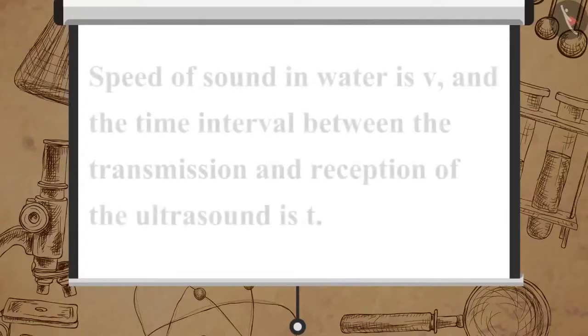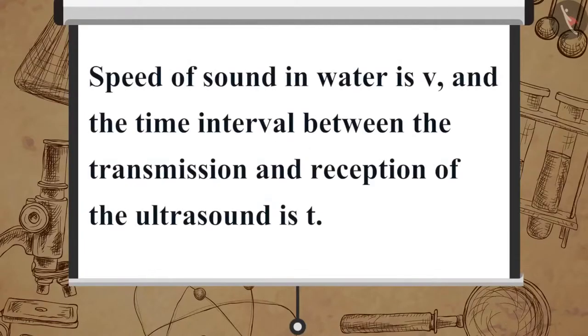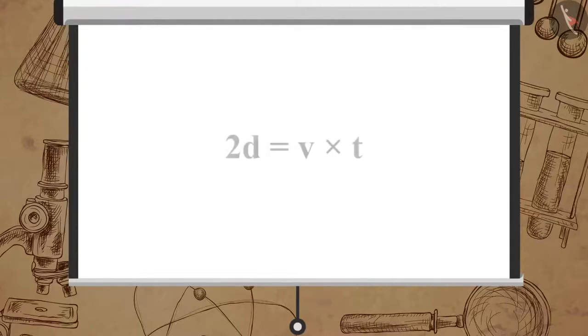Suppose the speed of sound in water is V and the time interval between the transmission and reception of the ultrasound is T. Then, the distance 2D travelled by the ultrasound can be written as 2D equals V multiplied by T.